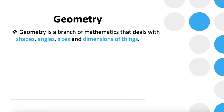First of all, what exactly is geometry? Geometry is a branch of mathematics that deals with shapes, angles, sizes, and various dimensions of things. We will deal with various shapes and angles in one dimension, two dimension, and three dimension in a coordinate plane. That's all we will discuss in geometry.